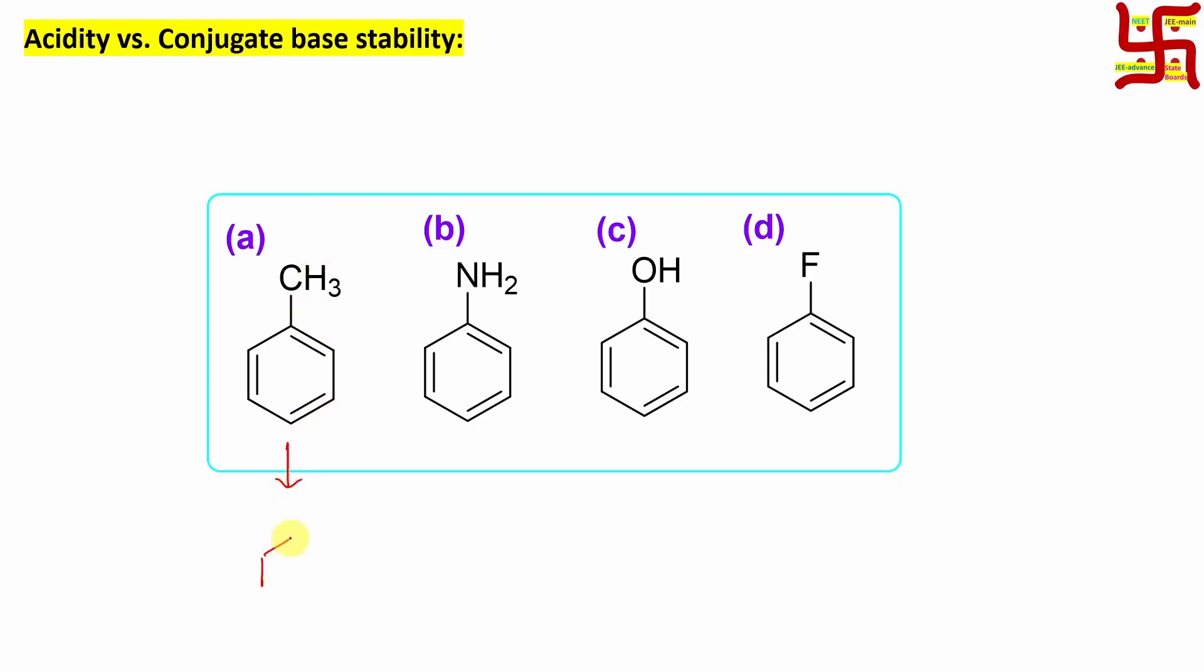Let me draw the conjugate base for each and every molecule. This is CH2 minus for toluene. Here this is aniline, so N minus. And in this case phenol, it is phenoxide, O minus.